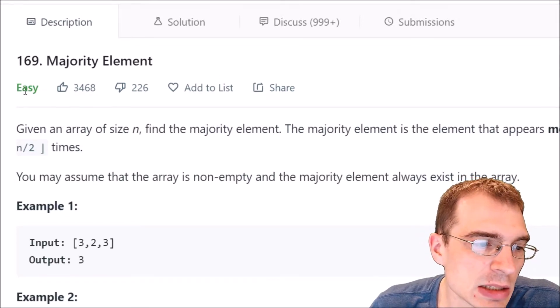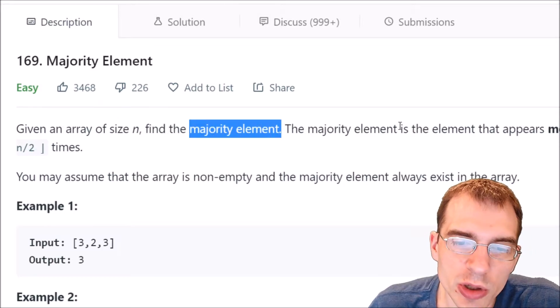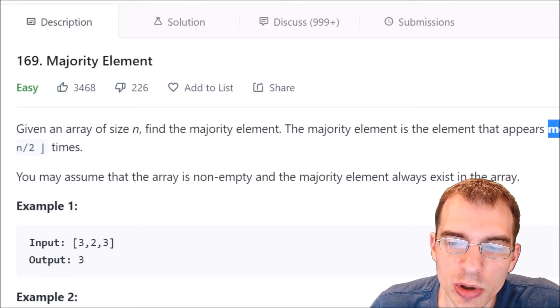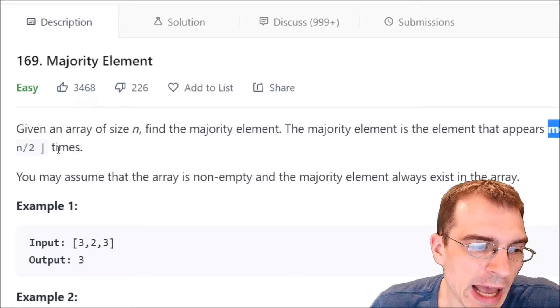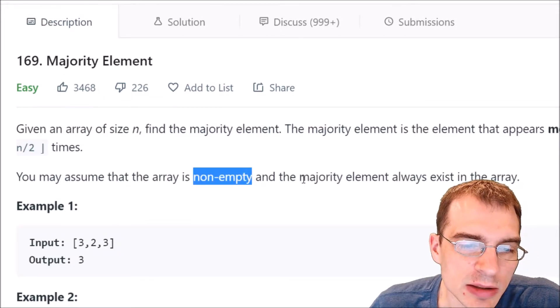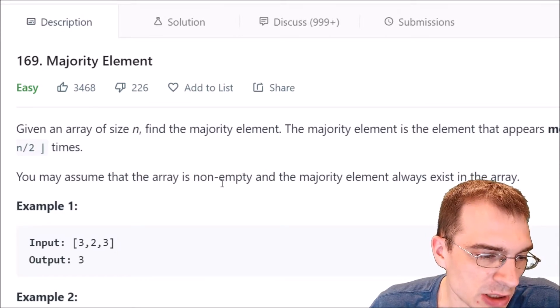This is classified as an easy problem. Now I'll start with the problem description here. Given an array of size n, find the majority element. The majority element is the element that appears more than n divided by 2 times. So it appears more than half the time of the size of the array. You may assume that the array is non-empty and that the majority element always exists in the array. So we're not going to be given an array that doesn't have a majority element. There will always be something that is the correct answer.